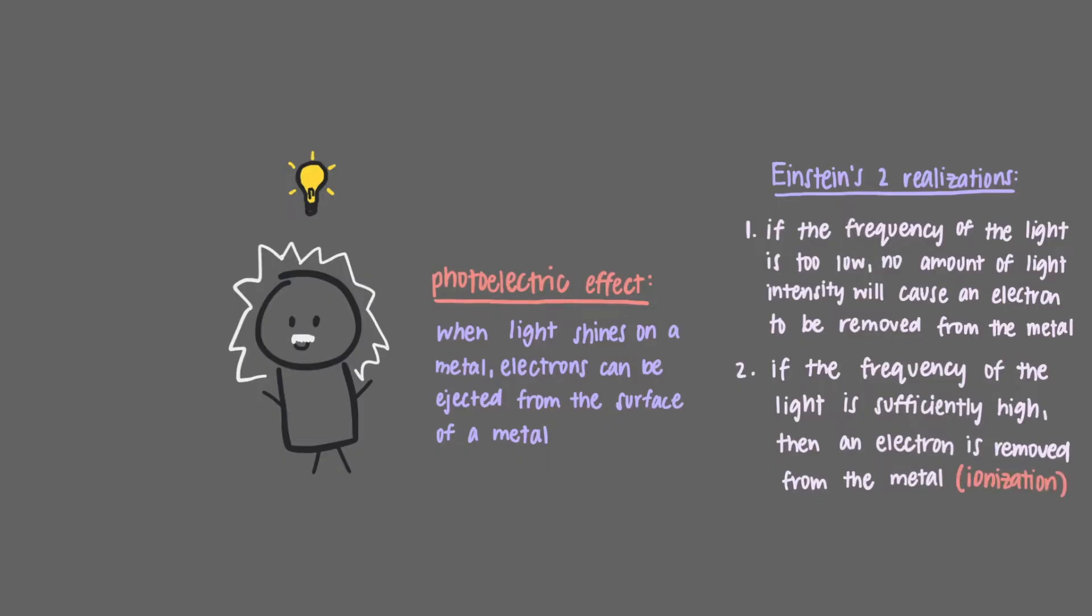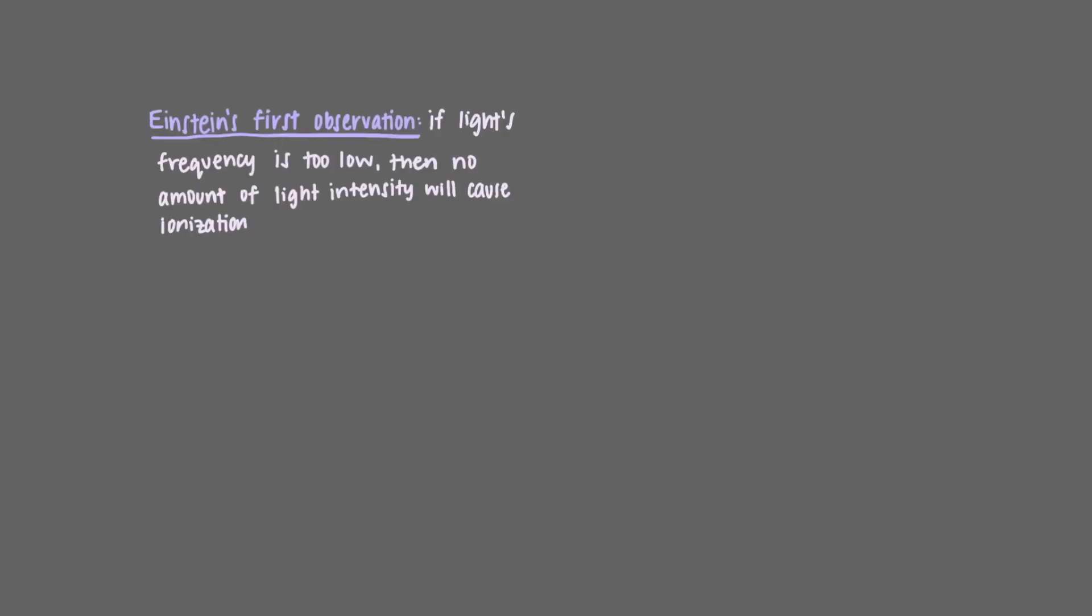Unfortunately, Einstein didn't really understand what was going on. It would only be once quantum mechanics was solved that we learned the reasons for Einstein's observations. First, his observation that if light's frequency is too low, then no amount of light intensity will cause ionization now makes perfect sense to us.